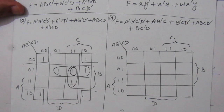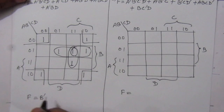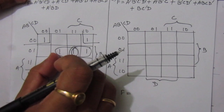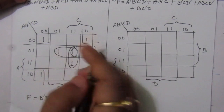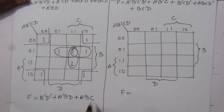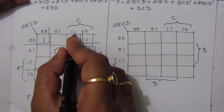Now combining the groups: the first group gives B-bar D-bar; the second term gives A-bar B D; the third term gives A-bar B C-bar D-bar; and the fourth term gives B C D. So the simplified Boolean expression for part C is: F = B̄D̄ + ĀBD + ĀBC̄D̄ + BCD.